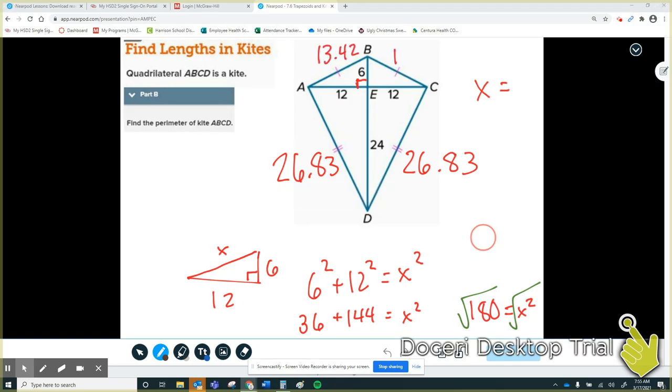Since I found one side, again, special thing about kites is that the two adjacent sides are congruent. Now that I found all four of these, I simply need to add them all up to get my total answer. So let's do that.